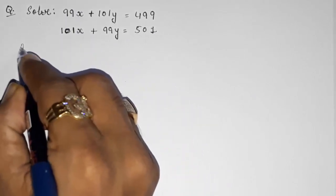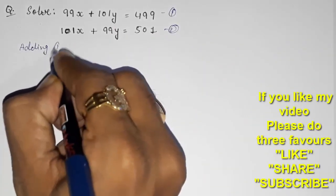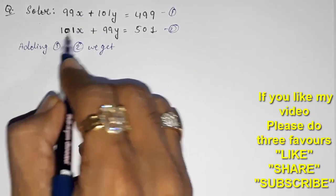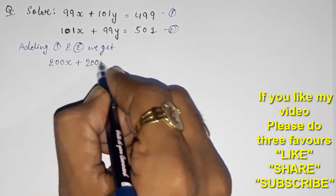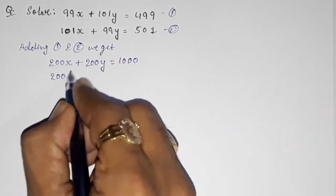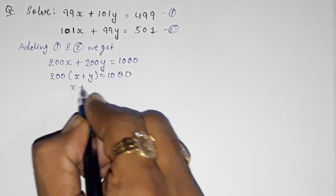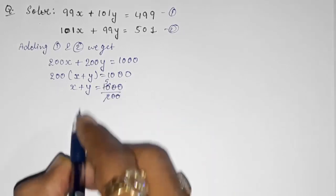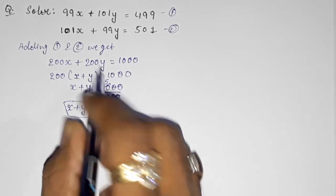Adding equation one and two: 99x + 101x gives 200x, and 101y + 99y gives 200y, equals 1000. Take out 200 common: x + y = 1000 ÷ 200 = 5. So we get equation three: x + y = 5.